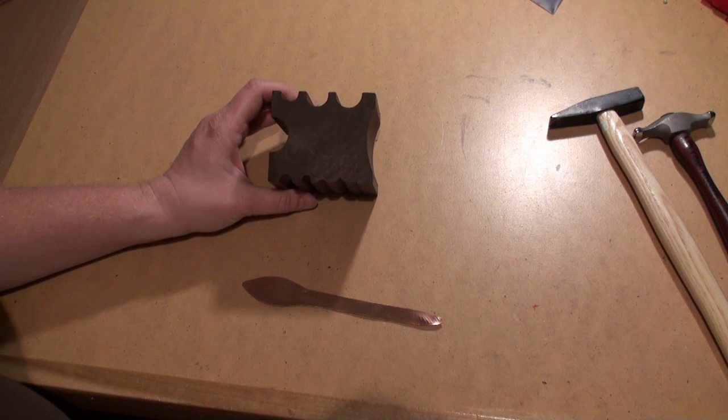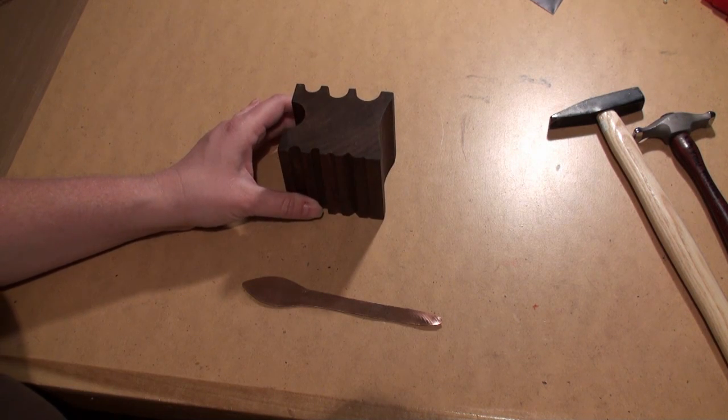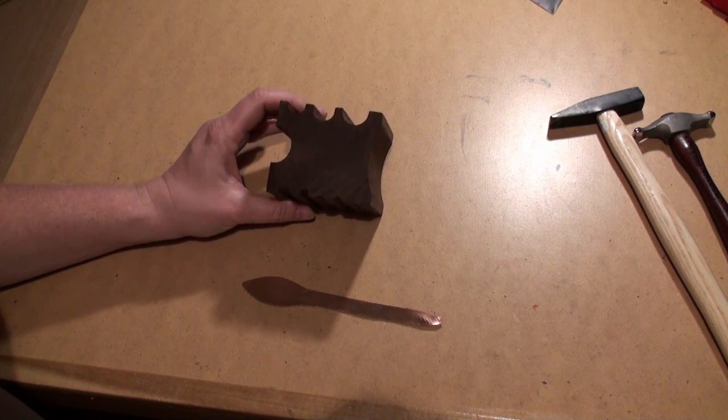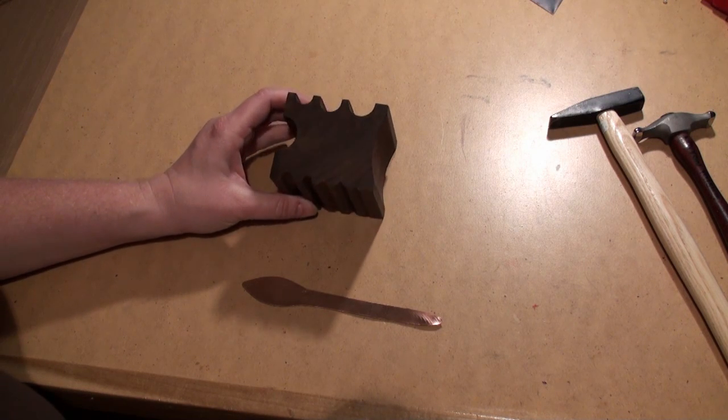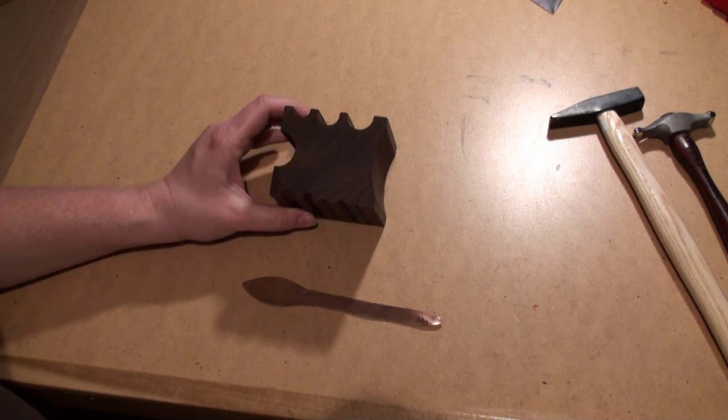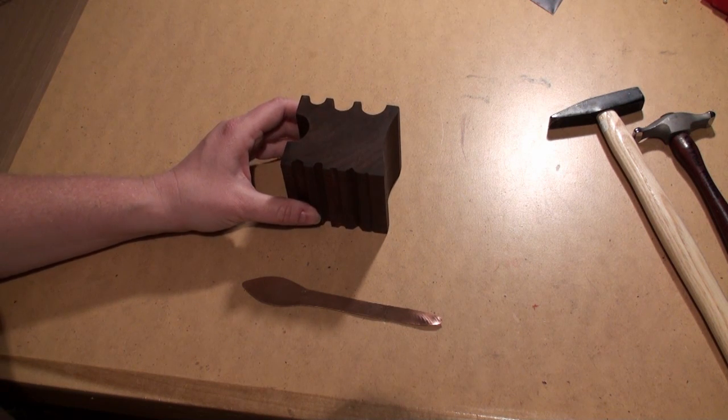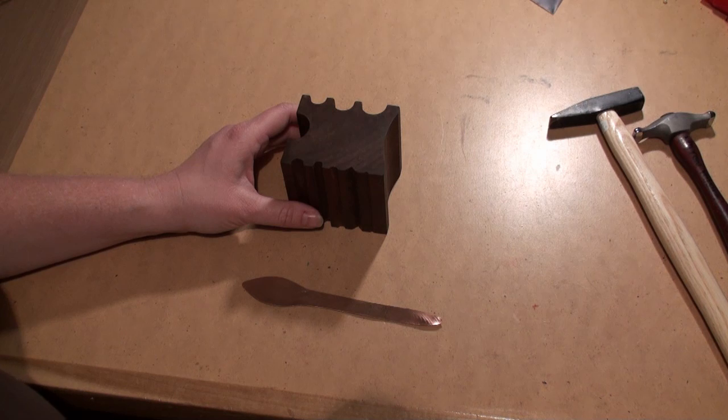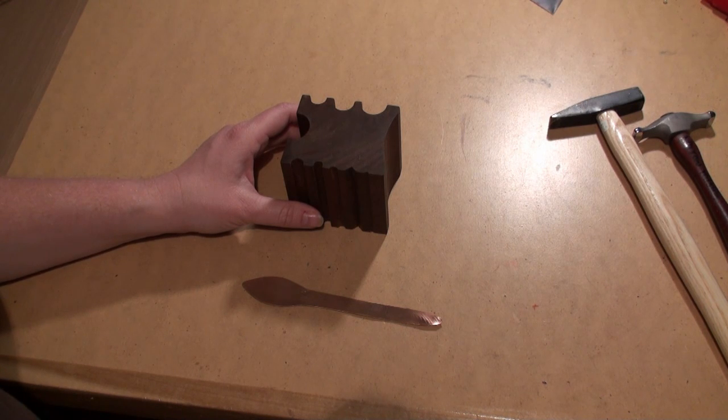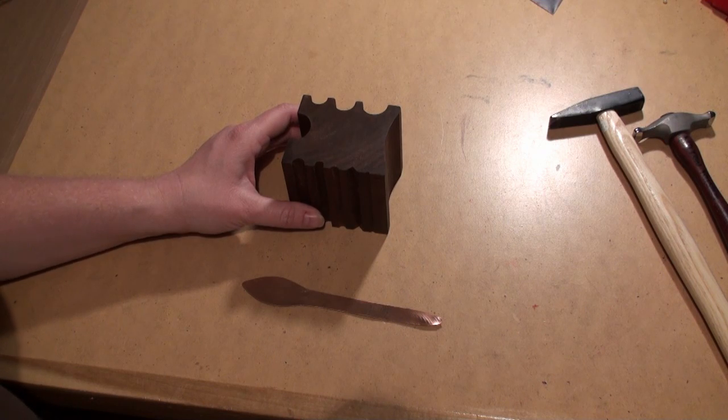This block happens to be made out of beautiful black walnut that we got in Oregon. My father-in-law took it back to Idaho and made this for me based off of some of my specifications. The purpose for this block is to create grooved forms called spiculums in the case of the projects that I'm working on.